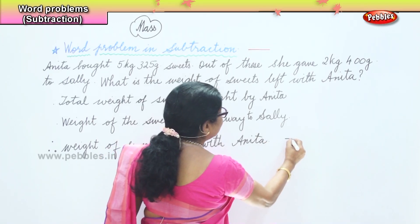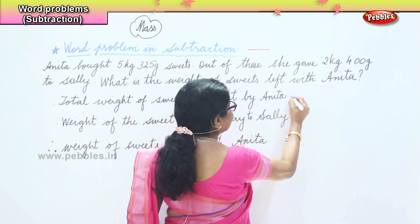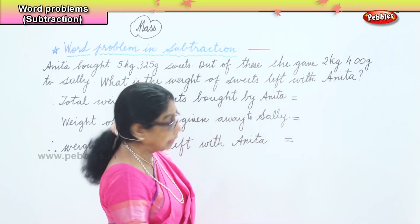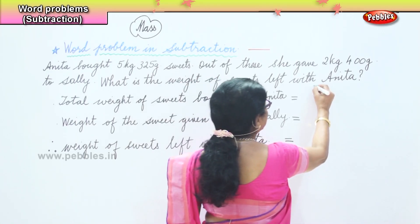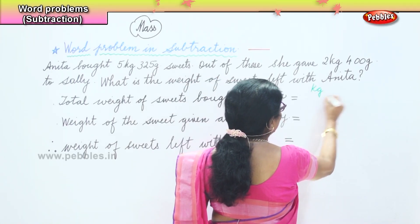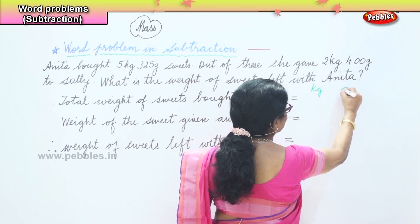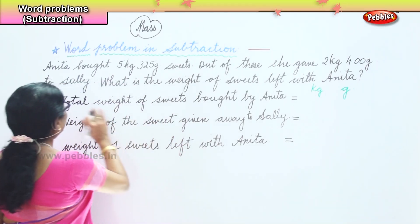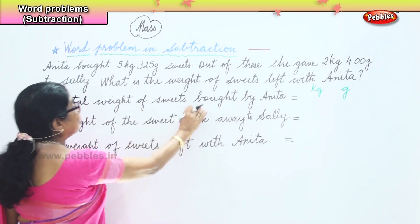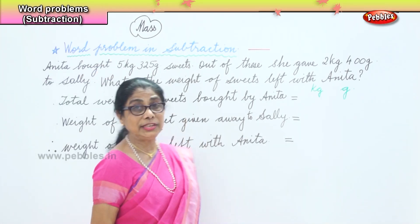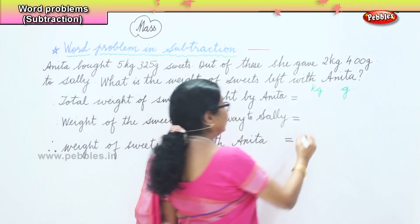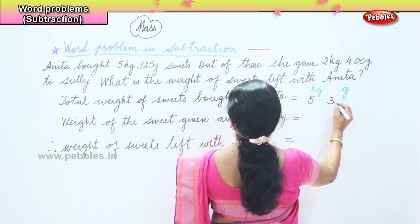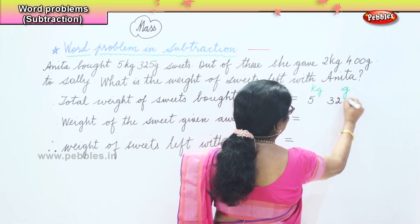Now we are going to write down the column and place the numbers correctly. For this we need to write kilogram and gram. Then we do the subtraction. The total weight of sweets bought by Anita is 5 kg 325 grams, so we put down 5 kg 325 grams.